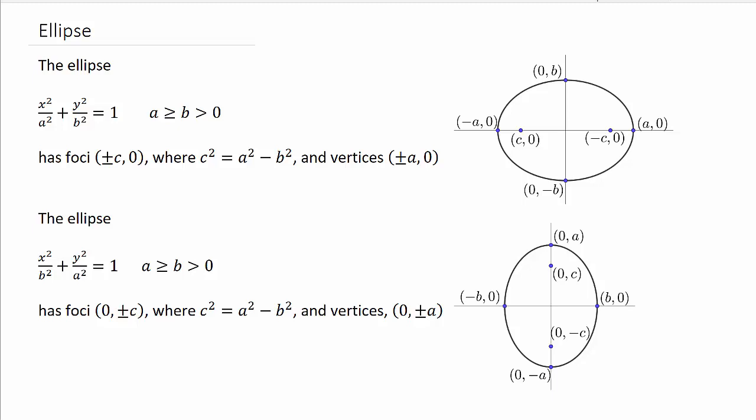If we have an ellipse in the form x squared over b squared plus y squared over a squared equals 1, notice a is larger, so now the larger one is underneath y. It has foci at 0, plus or minus c, and c squared equals a squared minus b squared, and the vertices are at 0, plus or minus a. This would be your major axis, and this would be the minor axis.